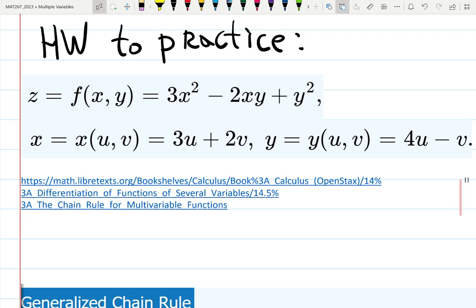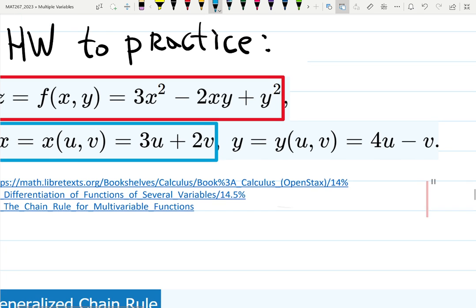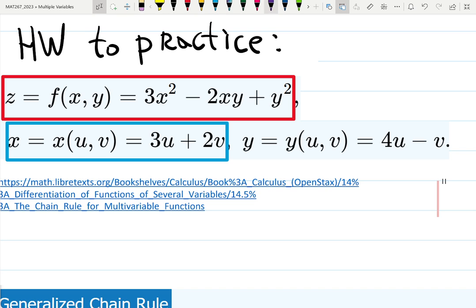Z is 3x squared minus 2xy plus y squared. X and y are also functions, and all of them now depend on two variables. So I would put a huge box for the main thing, and just like before, I will do blue box for x. Now x has u and v variables. So x is 3u plus 2v, and y is 4u minus v.